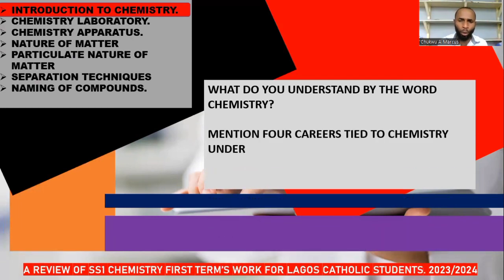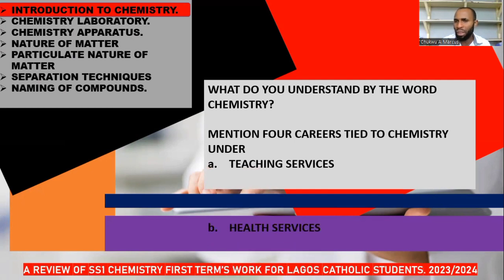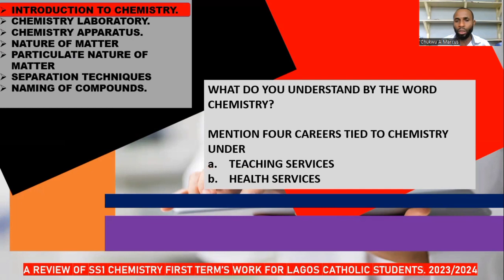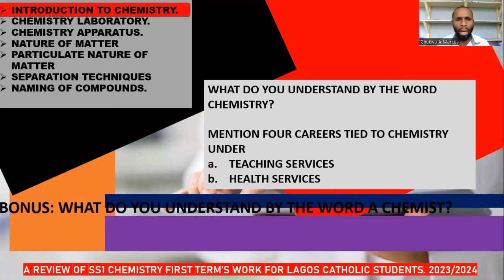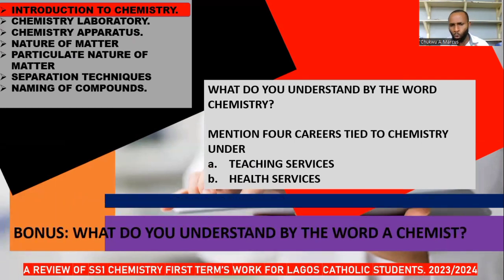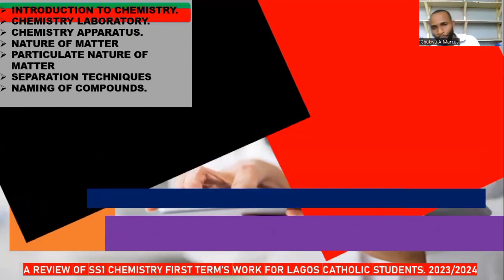Are you able to mention careers tied to chemistry under areas like teaching services, manufacturing industries, petrochemical industry, and health services? Can you mention at least two to four careers tied to each? And the bonus question: what do you understand by the word 'chemist'? Is it someone that studied chemistry, or someone that practiced chemistry after studying it? That is who we prefer to call a chemist.